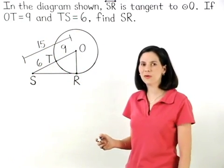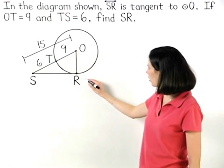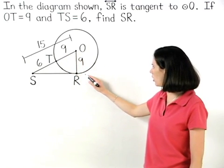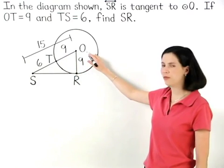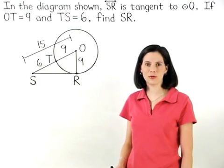And since we're given that OT equals 9, we know that OR must also equal 9, since OT and OR are both radii of circle O, and all radii of a circle are congruent.